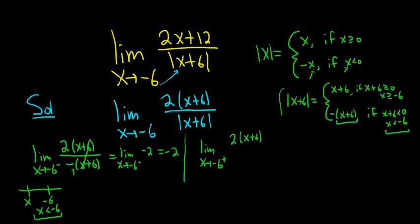So 2x plus 6. Absolute values take some work to work with. So negative 6. Let me draw a number line. Here's negative 6. And now we're approaching from the right. So x is on the right. That means x is bigger than negative 6. So now we're using this piece up here. So our absolute value is just x plus 6.